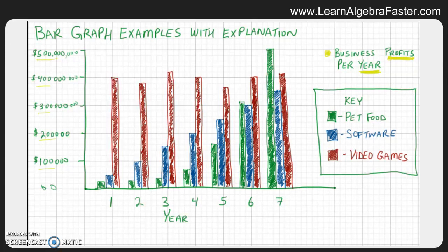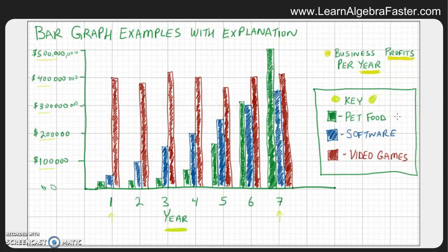The horizontal axis, as the title showed, is measured and grouped by year — from year one of the business through year seven. The key shows three different colors for three different types of businesses: green bars for a pet food business, blue bars for a software company, and red bars for video games. Let's take a look at the data and see how these businesses operate.